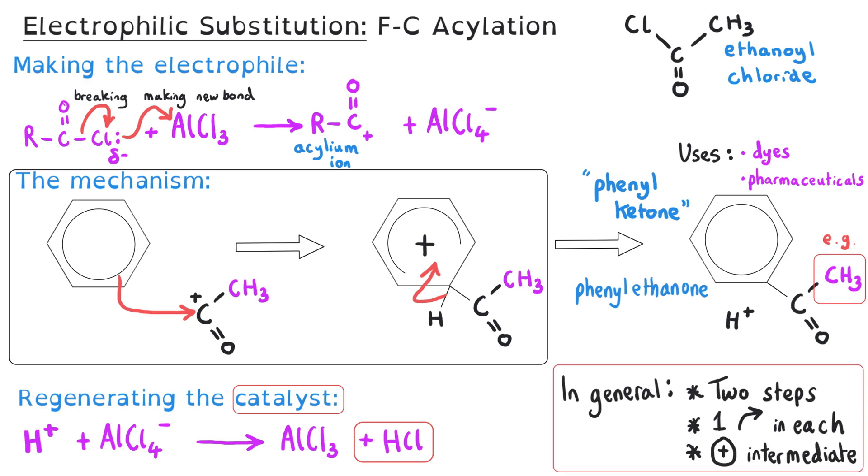And so in general, in electrophilic substitution, there are always two steps. And in each of those steps, there is just one single curly arrow. And we also need to remember that there is a positive intermediate in any electrophilic substitution mechanism.